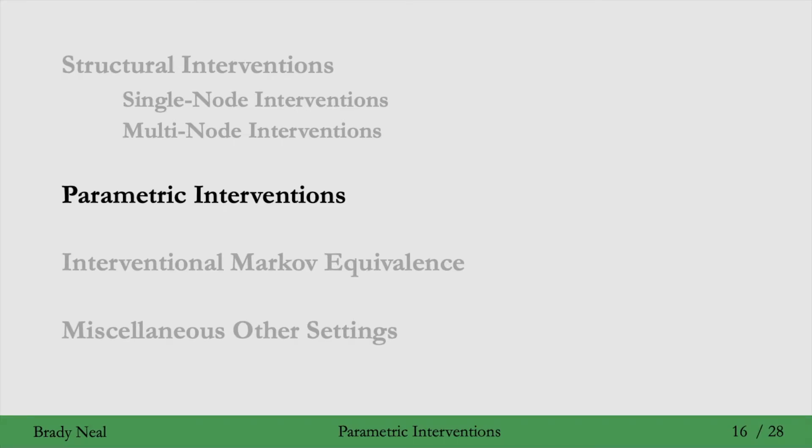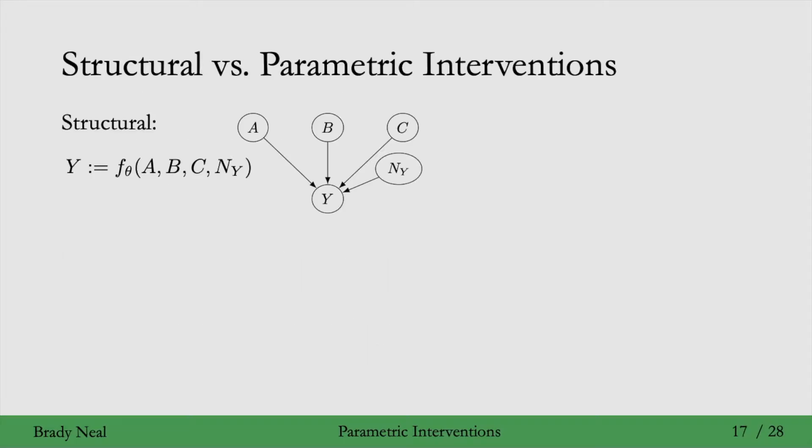This brings us to another kind of intervention known as parametric interventions. In structural interventions, say that this is the graph we're considering and we have this structural equation for Y. When we do a structural intervention on Y, we delete all of Y's parents and give it some noise variable, setting Y's distribution to equal the distribution of that variable.